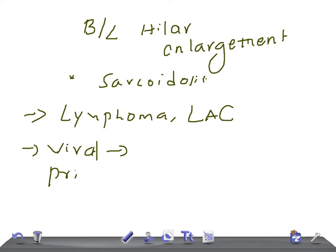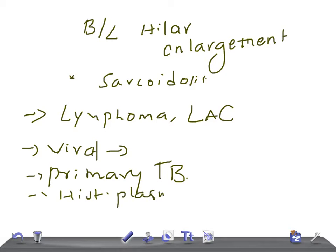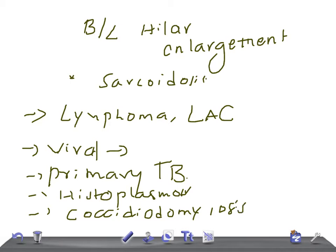Primary tuberculosis can rarely give bilateral hilar enlargement. Other causes include histoplasmosis and coccidioidomycosis. Vascular causes include pulmonary artery hypertension, which can also produce bilateral hilar enlargement.